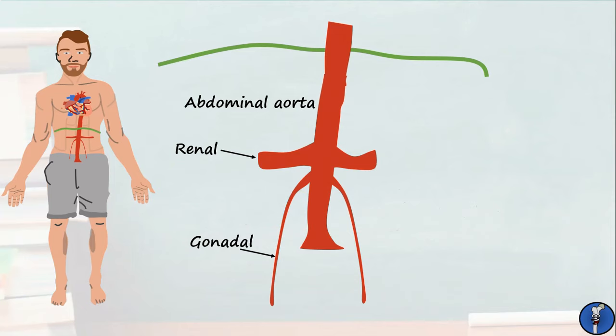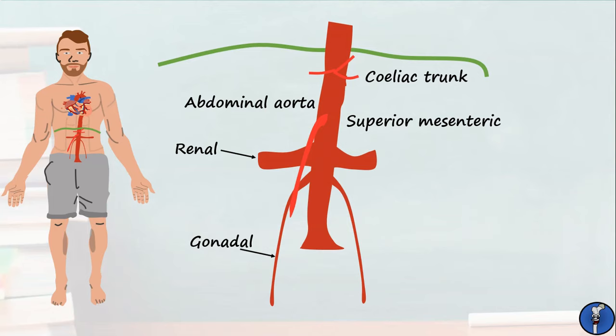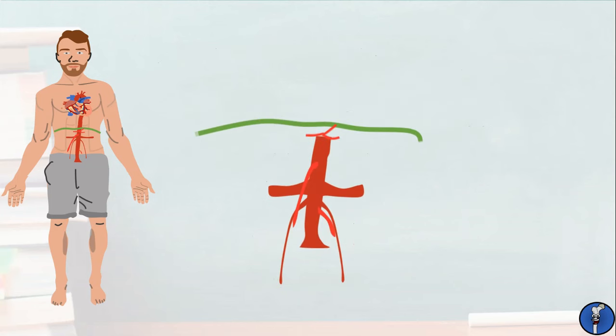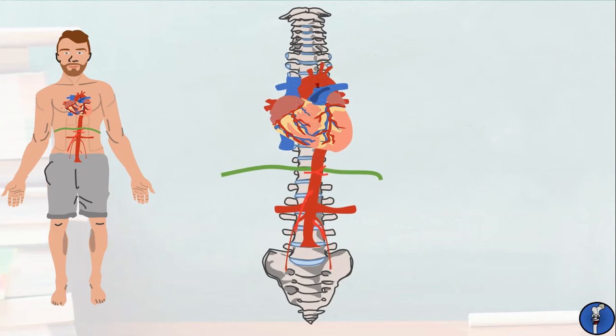Coming off the anterior face of the abdominal aorta are the three trunks that supply the gastrointestinal tract. These are the celiac trunk, which supplies the foregut; the superior mesenteric artery, which supplies the midgut; and the inferior mesenteric artery, which supplies the hindgut. Here's how all that fits in with the vertebral column.